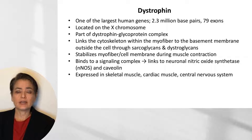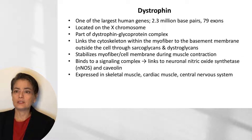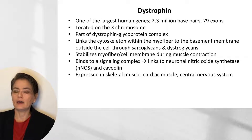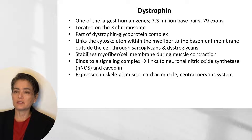Dystrophin's role is to link the cytoskeleton within the myofiber to the basement membrane outside the cell through the sarcoglycans and dystroglycans. This helps to stabilize the myofiber and cell membrane during muscle contraction. It also plays a role binding to a signaling complex that links to neuronal nitric oxide synthetase (nNOS) and caveolin. It is expressed not just in skeletal muscle, but also in cardiac muscle and the central nervous system, which is why we can see symptoms beyond muscle in patients with mutations in this protein.